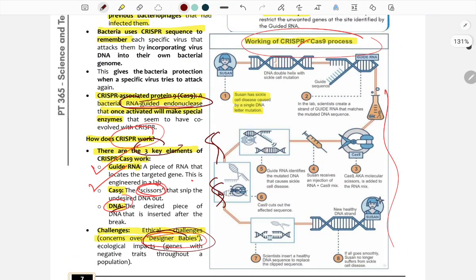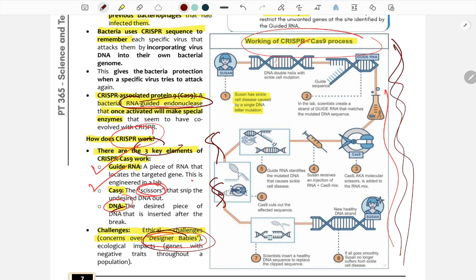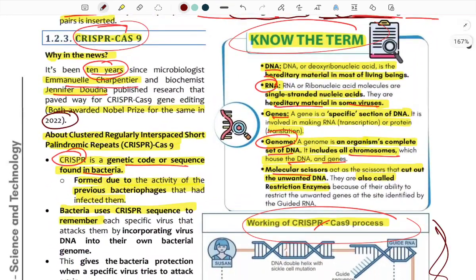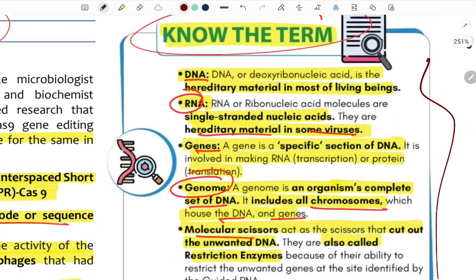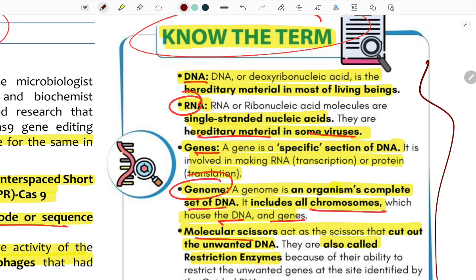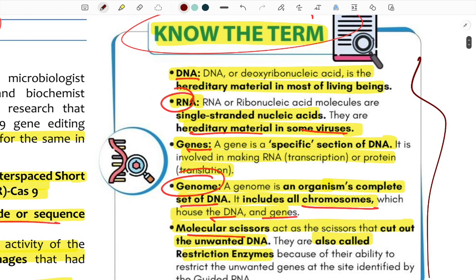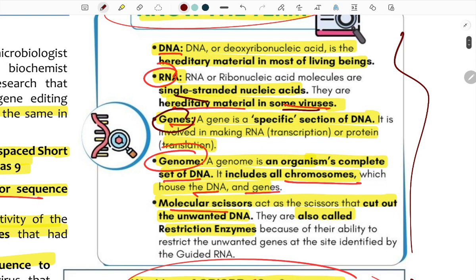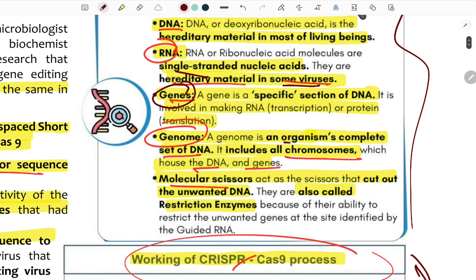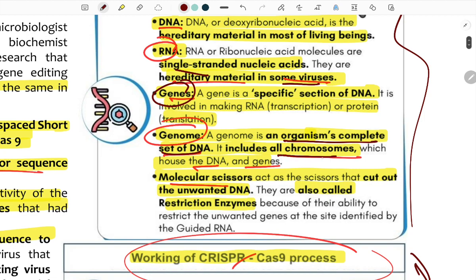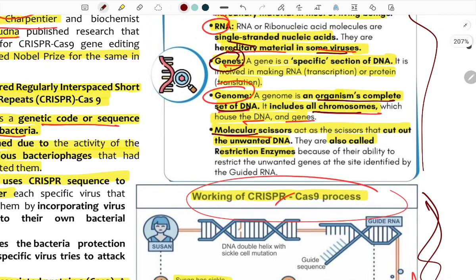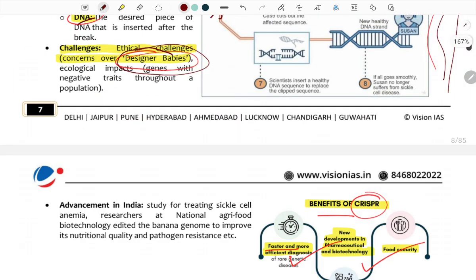CRISPR is a functional component with important biotech and biology background. Key basics: DNA (deoxyribonucleic acid) is double-stranded; RNA (ribonucleic acid) is single-stranded — some viruses like COVID use RNA. Genes make up the whole genome; all chromosomes house DNA. Molecular scissors cut unwanted DNA using restriction enzymes.